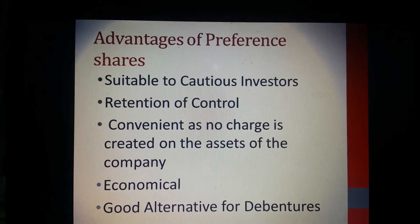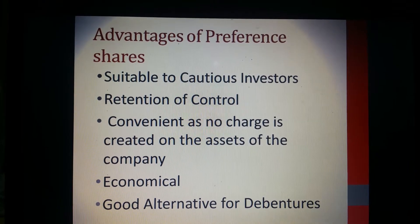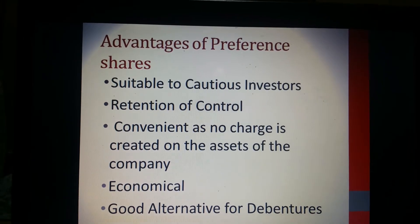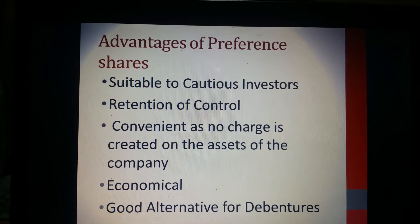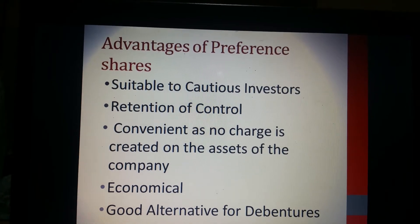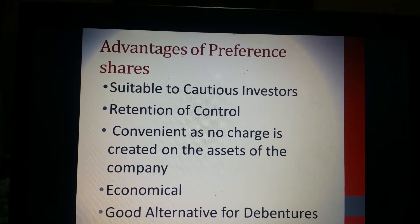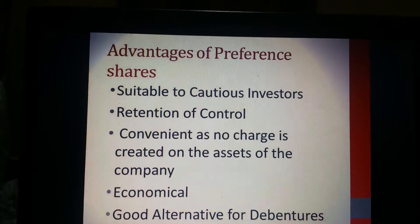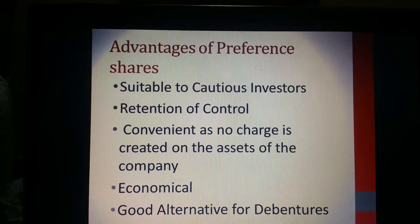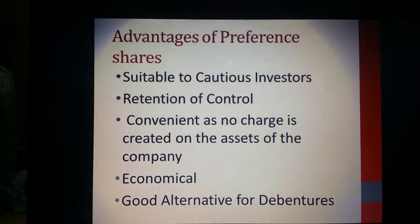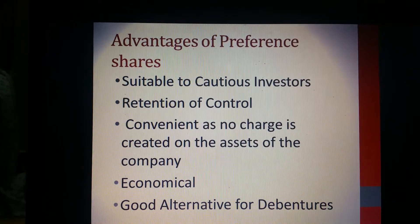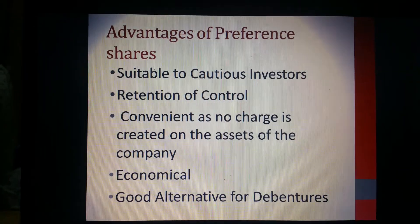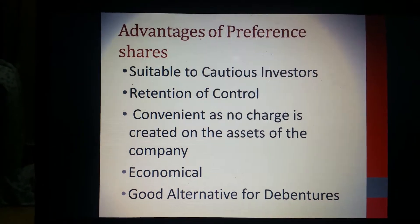Another advantage of preference shares is that they do not create any charge on the assets of the company. When issuing debentures, for example 10 lakh worth of debentures, then 10 lakh worth of company assets are kept aside — they can neither be sold nor mortgaged to obtain further financial assistance. In the event the company is wound up at a loss, those assets will be sold to repay the debenture holders. Whereas when issuing preference shares, the company does not have to keep aside such assets, so it does not create any charge on the company's assets.